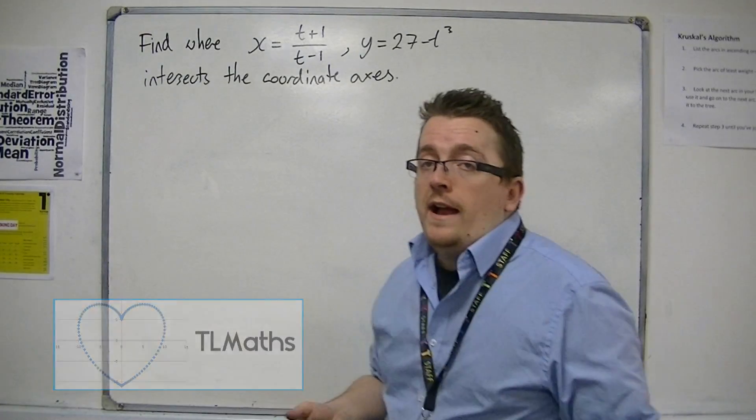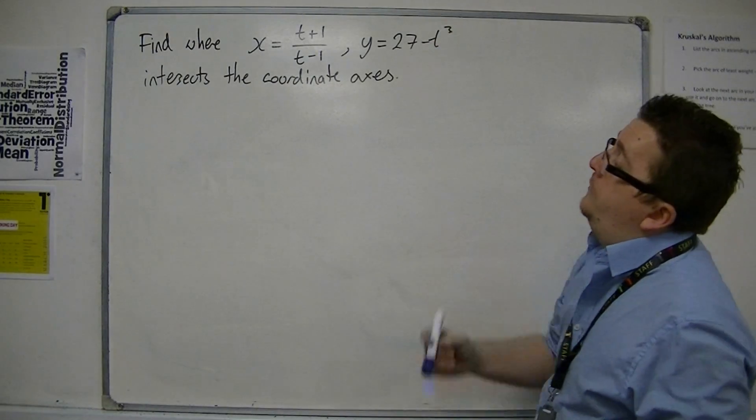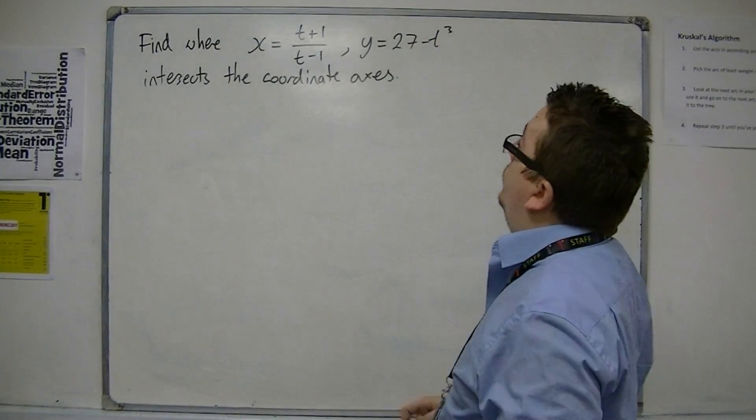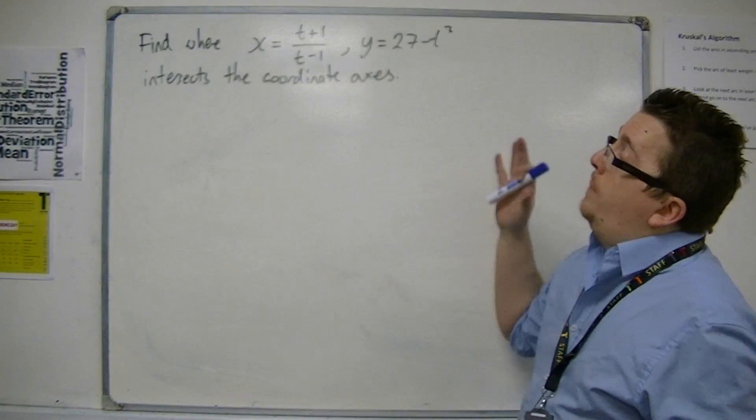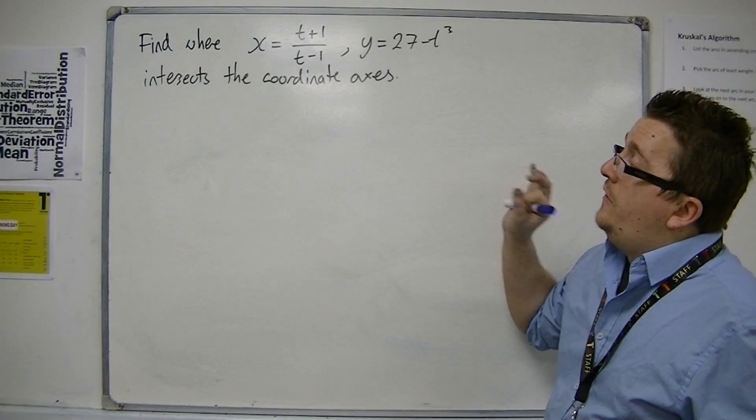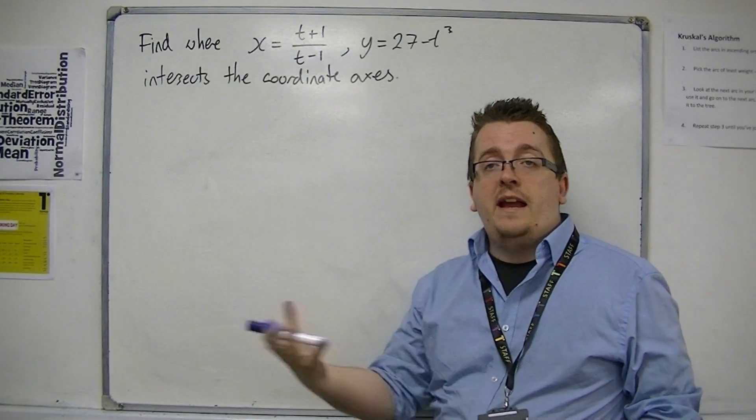In this video, what we have is a pair of parametric equations: x equals t plus 1 over t minus 1, and y equals 27 minus t cubed. And what we're being asked to do is to find where this curve intersects the coordinate axes, where it crosses the x and y axis.